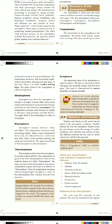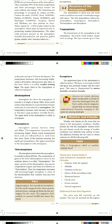Weather and climate are terms related to atmospheric conditions. Weather denotes the way the atmosphere behaves every day, while climate reveals the average of weather conditions over a long period of time — for example, one or two years. The difference between the two can be clearly understood with a comparison table.